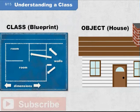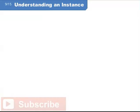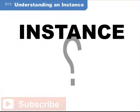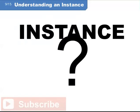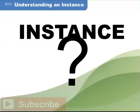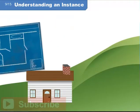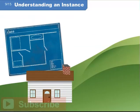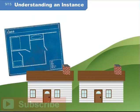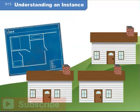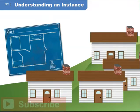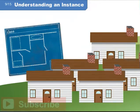The blueprint lives on paper. The house lives in the physical world. So, what is an instance? Think about it this way: can you build more than one house from the same blueprint? Sure you can. And each of those houses could be described as a physical instance of that blueprint.